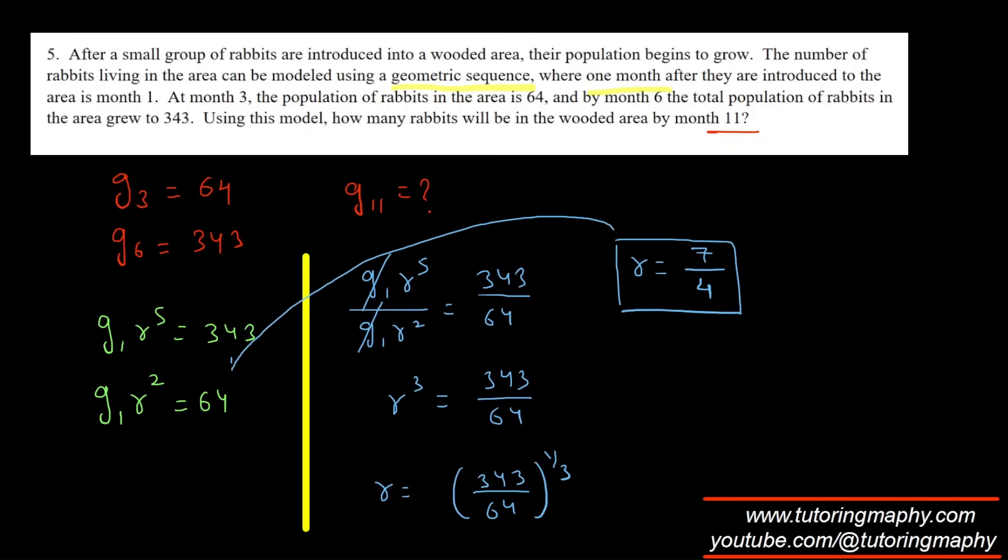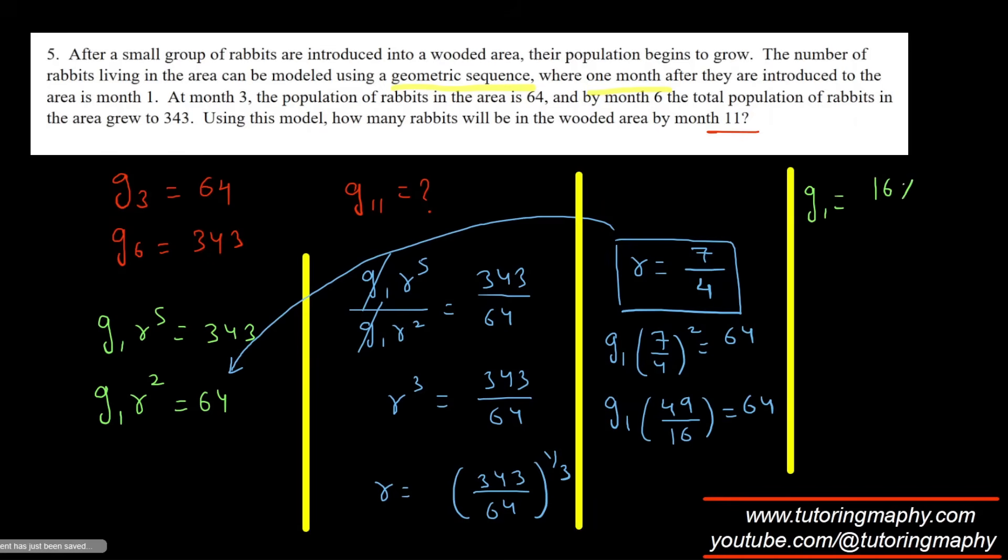I need to plug it in to get the value of g1. So g1 times r squared, which means g1 times 7 over 4 squared equals 64. So g1 times 49 over 16 equals 64. The value of g1 is, if I cross multiply, 16 multiplied by 64 over 49.